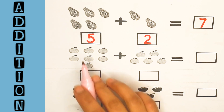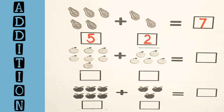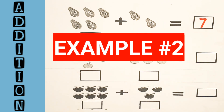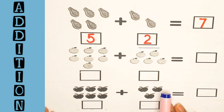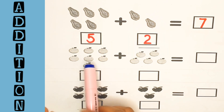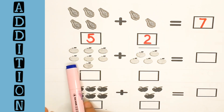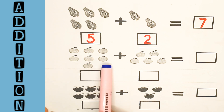Five and two is equal to seven. Let's take another example. Let's count the oranges: one, two, three, four, five.